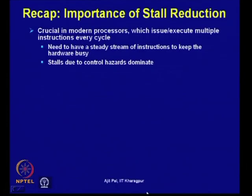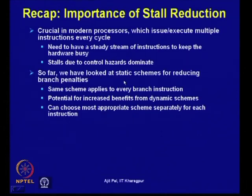The reason for that is, as more and more instructions are issued in a single cycle — as done in a superscalar architecture — the gap between two branches reduces in terms of instruction cycles. For example, if there is a branch every four instructions and three instructions are issued in a cycle, then in the next cycle itself that branch will appear. So far, we have looked at static schemes for reducing branch penalties.